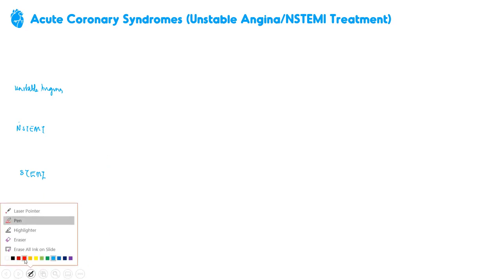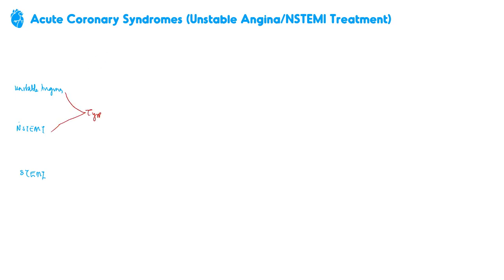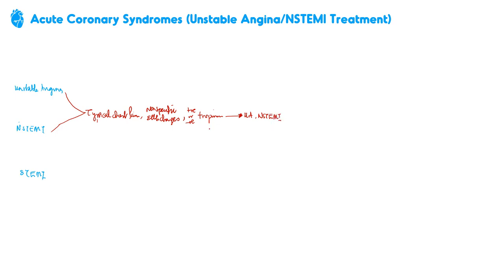Let's assume a patient came in with the typical chest pain, non-specific EKG changes or even ST depression, and they have positive or negative troponin. We can still, based on the symptoms, make a diagnosis of acute coronary syndrome — in this case either unstable angina or NSTEMI.